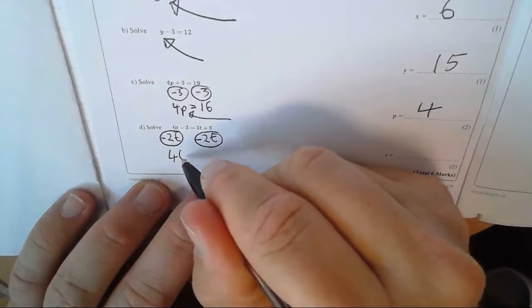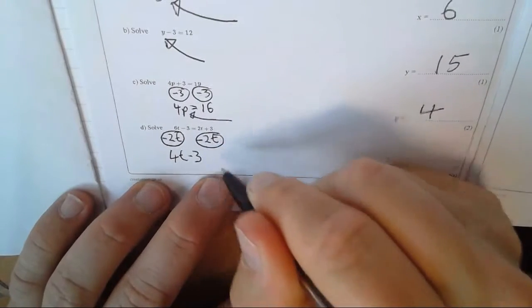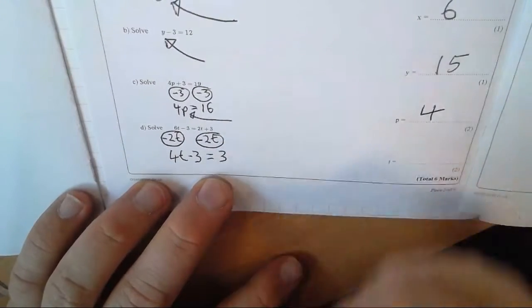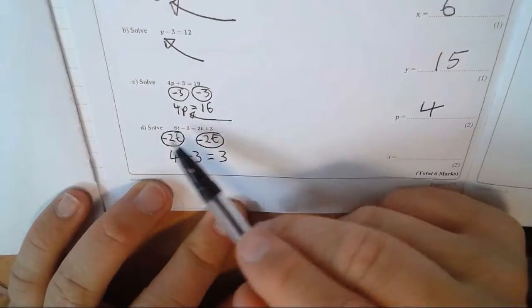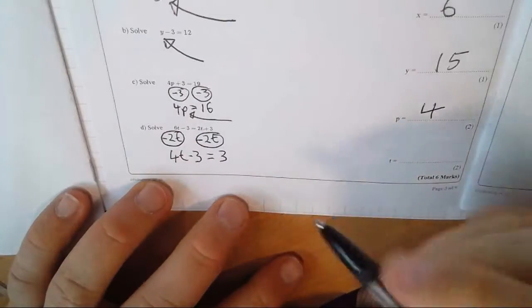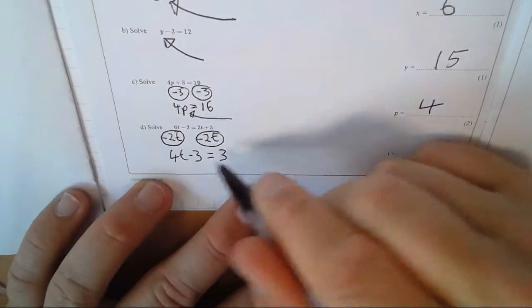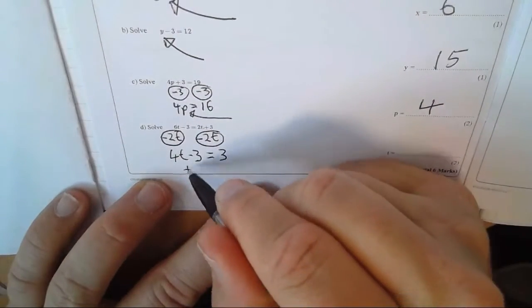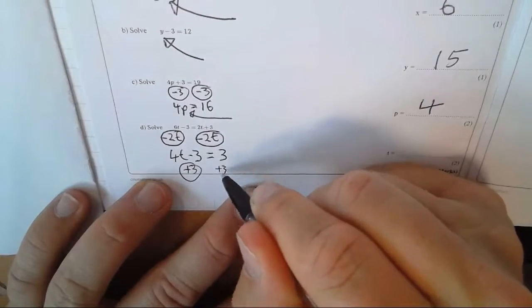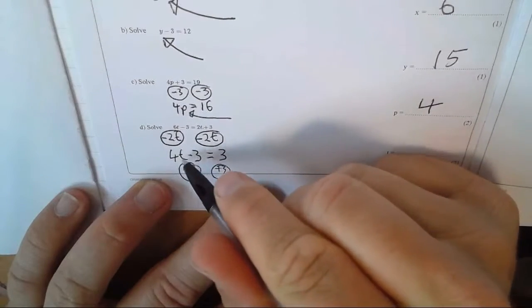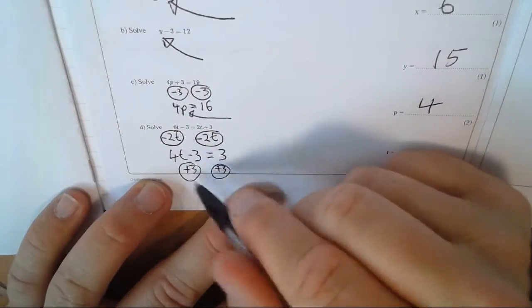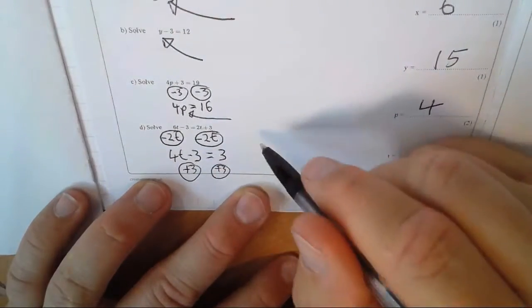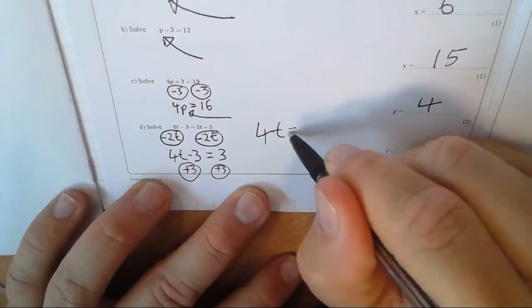That gives me 4t minus 3 on this side and 3 on this side. Okay, I've just taken away this 2t, but I have to take it away from both sides. So that gives me 4t minus 3 equals 3. Now, if I add 3 to both sides, because I just want the t on one side, the amount of t on one side and all the other numbers on the other side. So I've got 4t equals 6.